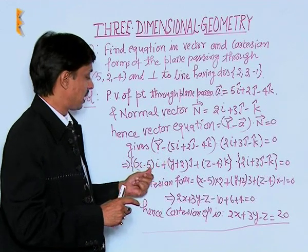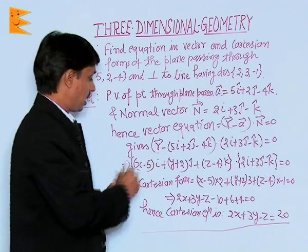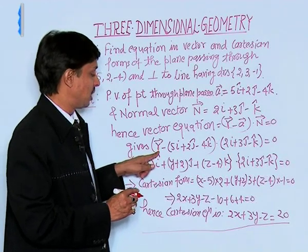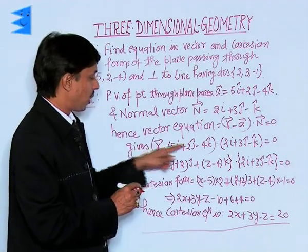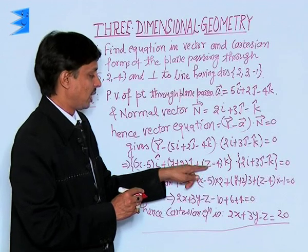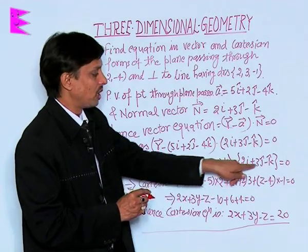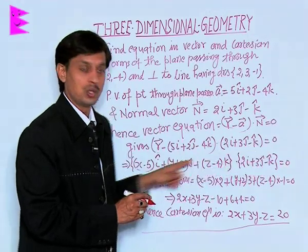(x - 5)i. Then if we have replaced R with xi + yj + zk, it will be (y + 2)j and (z - 4)k, dot product with 2i + 3j - k equals 0.